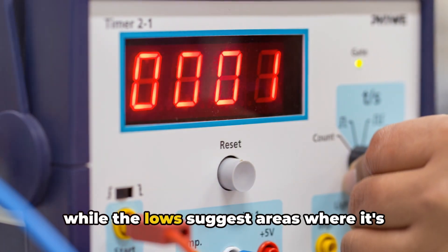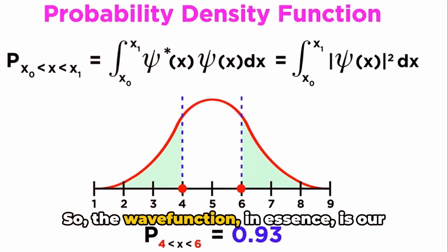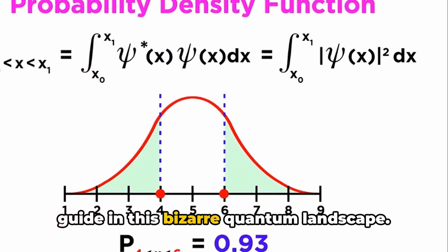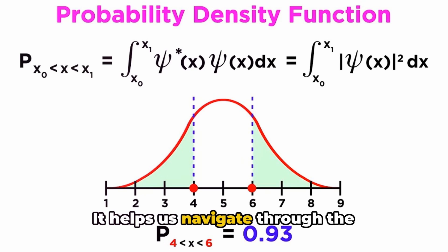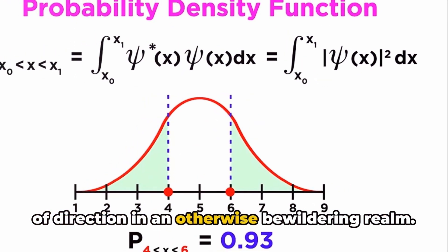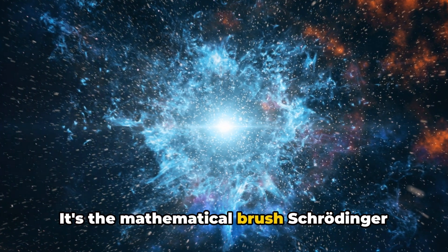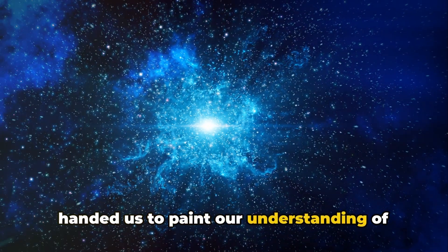These highs represent areas where the quantum object is most likely to be found, while the lows suggest areas where it's least likely to be. So the wave function, in essence, is our guide in this bizarre quantum landscape. It helps us navigate through the uncertainties, providing us with a sense of direction in an otherwise bewildering realm. It's the mathematical brush Schrödinger handed us to paint our understanding of the quantum world.